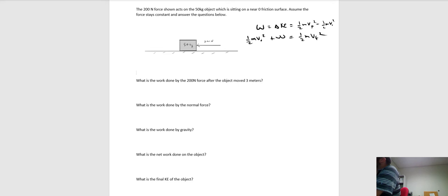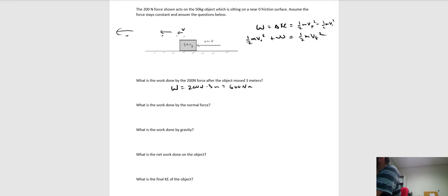Looking at this example: a 200-newton force applied to a 50-kilogram object. The object accelerates to the left; the motion diagram shows velocity getting bigger and bigger. What is the work done by this 200-newton force after the object moves three meters? The work is 200 newtons times 3 meters, giving 600 newton-meters. The work is positive because the force vector and the motion are both to the left.